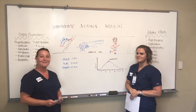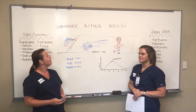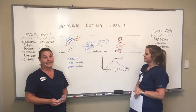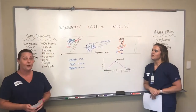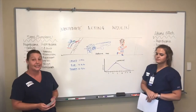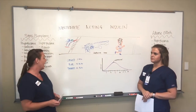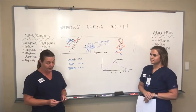Hi, I'm Holly. I'm Lindsay. And today we're going to talk about intermediate acting insulin. The onset is 2 to 4 hours, the peak is 4 to 10 hours, and the duration is 12 to 16 hours.